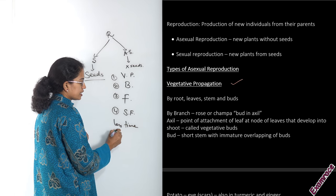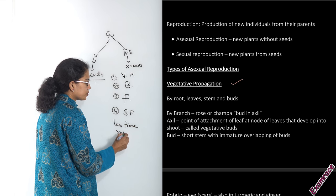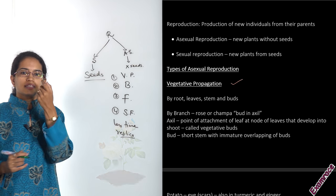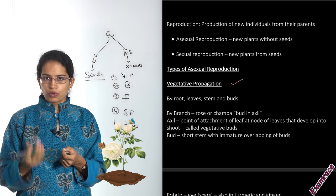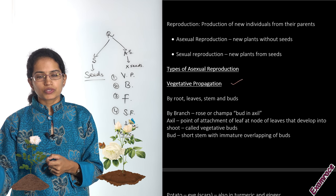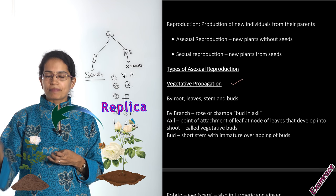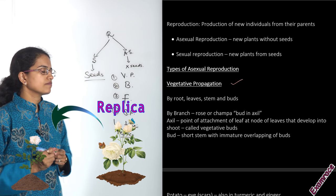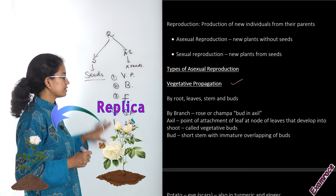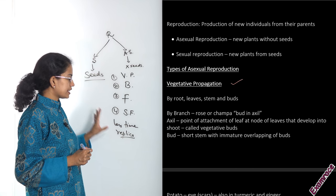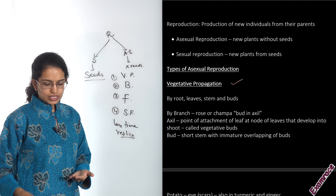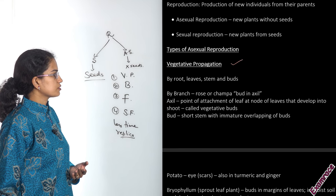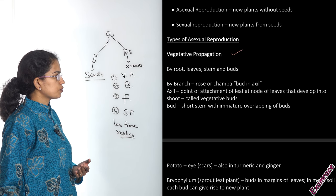The benefit of all four asexual reproduction processes is that they are time-saving. They usually create a replica — for example, if I take the branch of a white rose, it would become a white rose. So exact copies are usually seen with very little variation. It also takes less time to produce the new species.